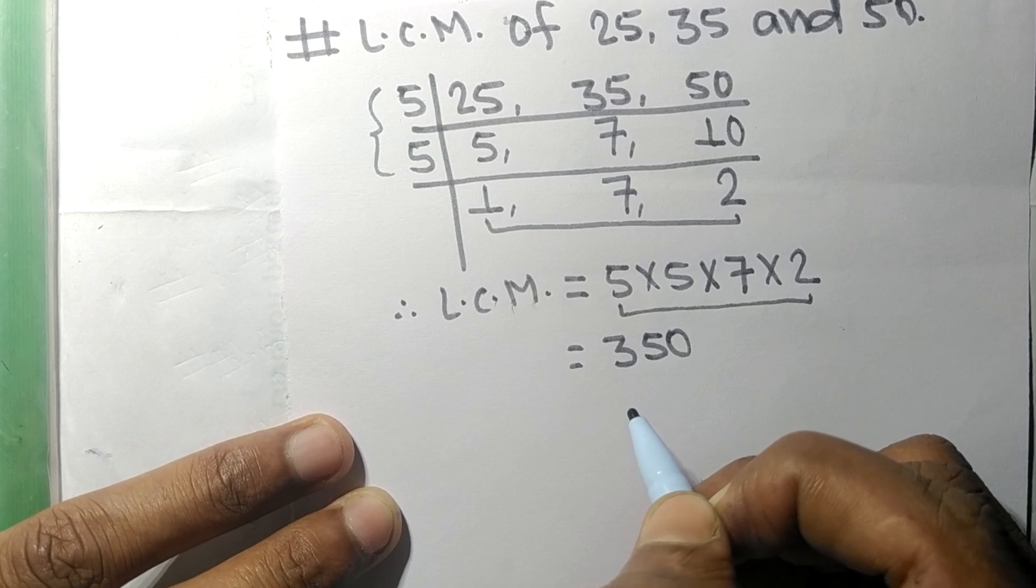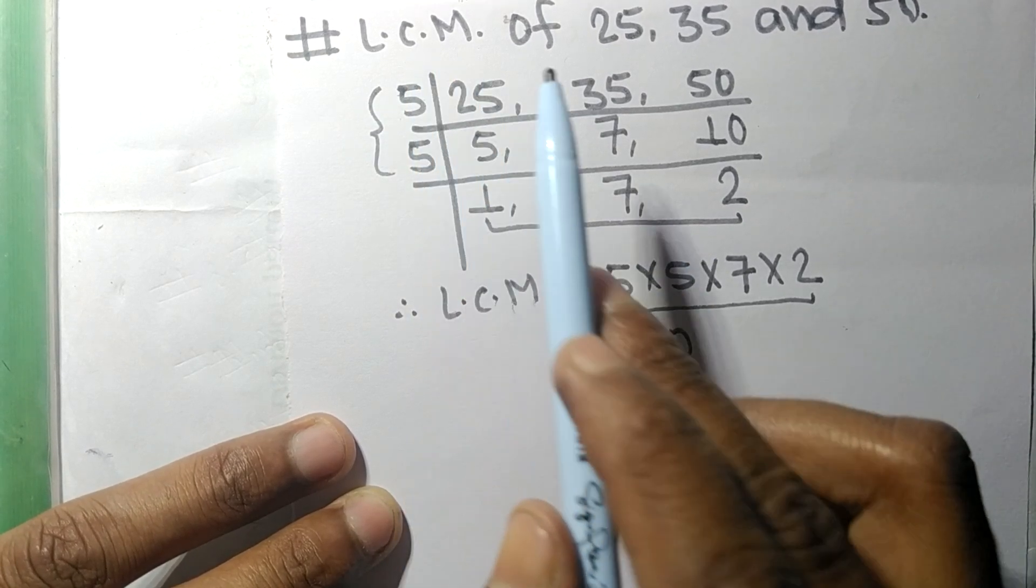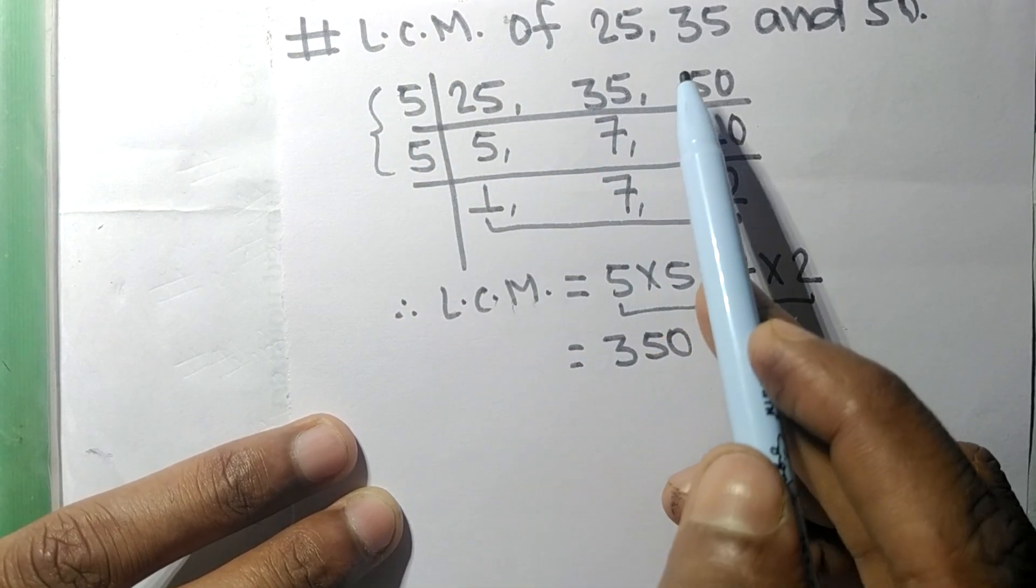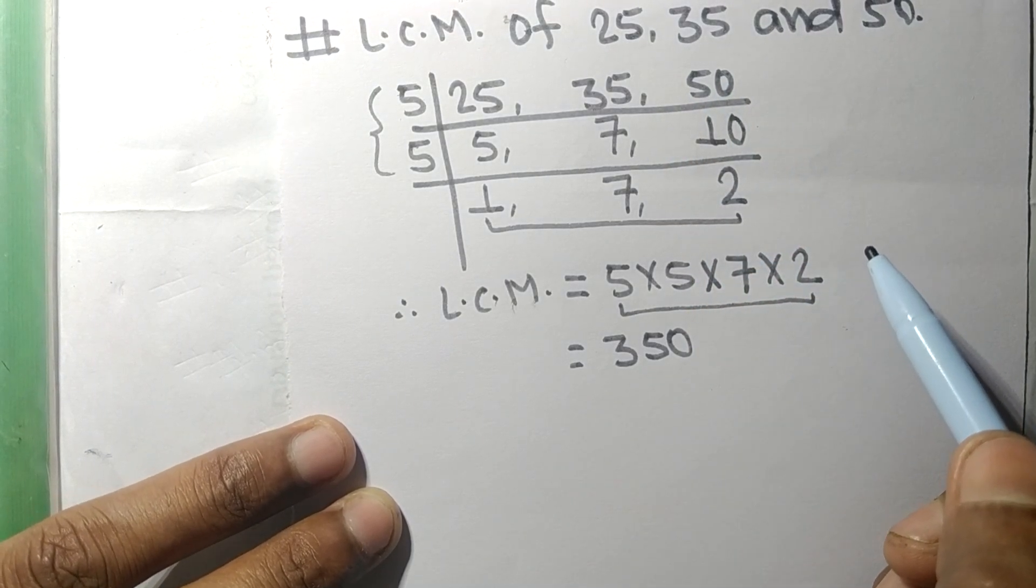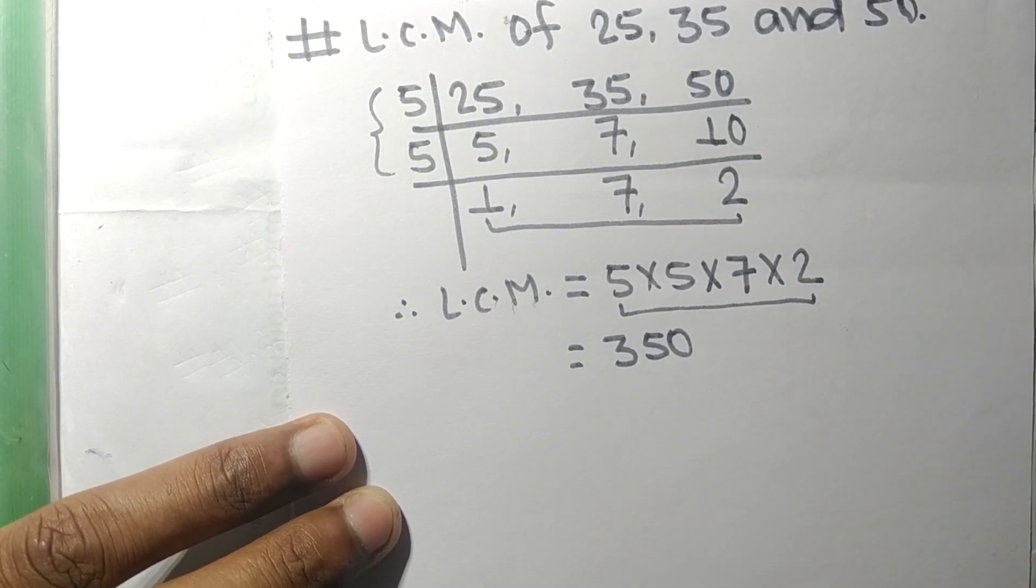So 350 is the LCM of 25, 35, and 50. So this much for today and thanks for watching.